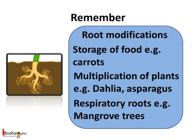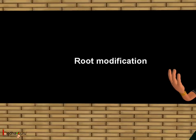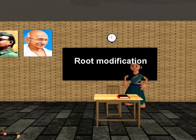So remember children, in certain plants, the roots get modified to perform special functions — like the storage of food, for example, carrot and radish; for the multiplication of plants, for example, dahlia and asparagus; respiratory roots, for example, mangrove trees; prop roots, to give extra support, for example, the banyan tree; climbing roots, to climb up a support, for example, the money plant; and parasitic roots, to take water and nutrients from the host, for example, the dodder plant. That was all about root modifications. Bye-bye, children.